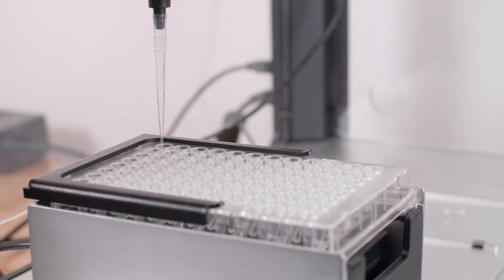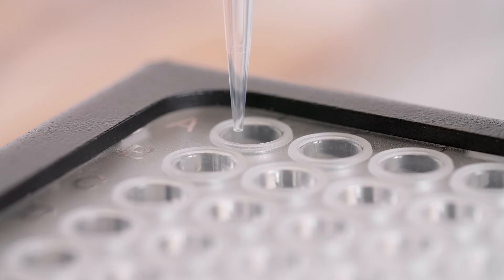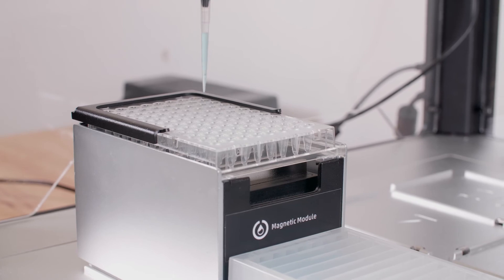Calibrating your magnetic module is similar to any other OT2 labware setup. You simply adjust the robot's positioning and save it for the first well in a piece of labware, and then it knows where all the other wells are.